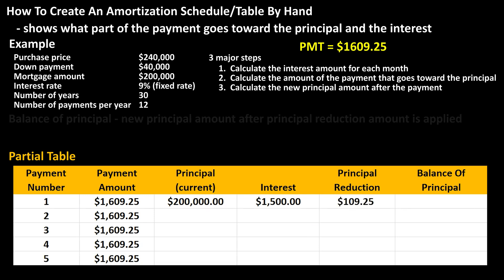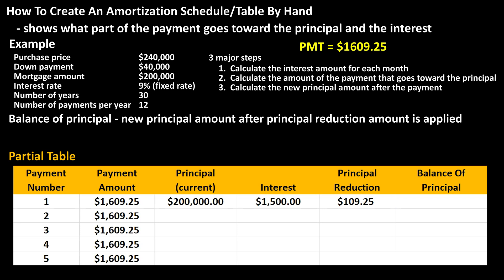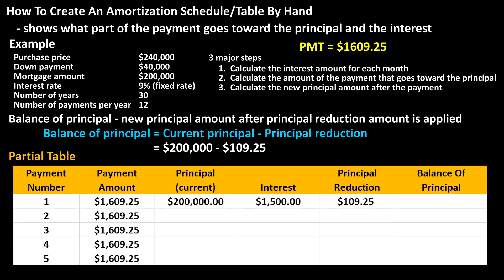The last column — the balance of principal — is the new principal amount after the current payment and principal reduction are applied. The formula is the current principal minus the principal reduction. So we have $200,000 minus $109.25, which calculates to $199,890.75. We can put that in the table, and the first row of the table is now complete.